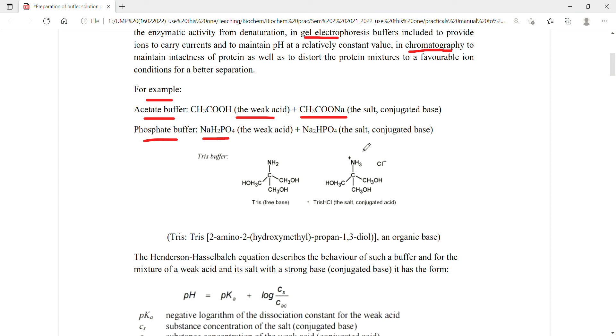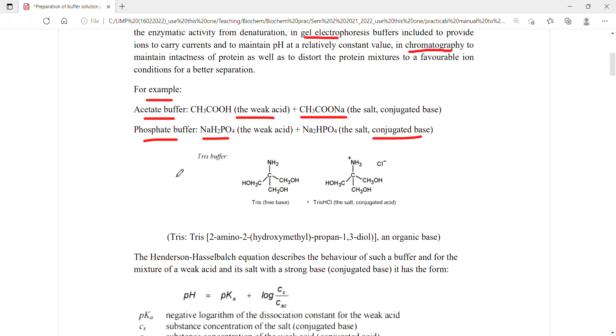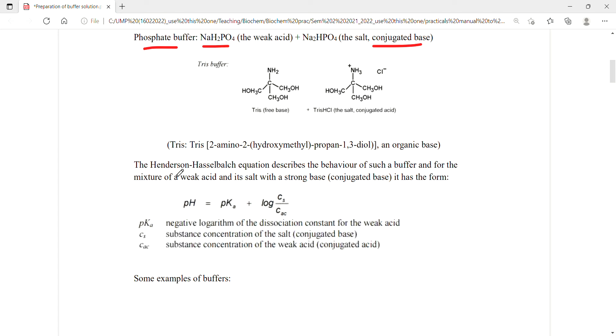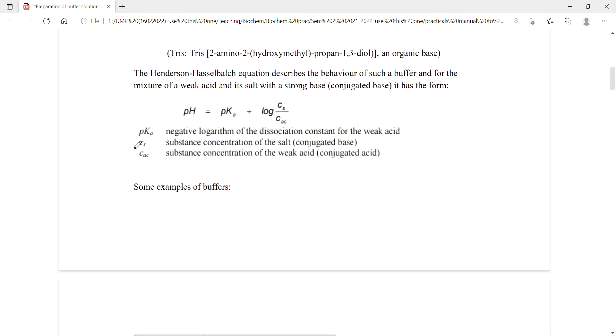So here you can see it has the weak acid and also its conjugated base together. And another popular one is tris buffer and it's normally used in SDS page or gel electrophoresis. Later when you learn about SDS page you will realize that tris buffer is the choice of buffer.